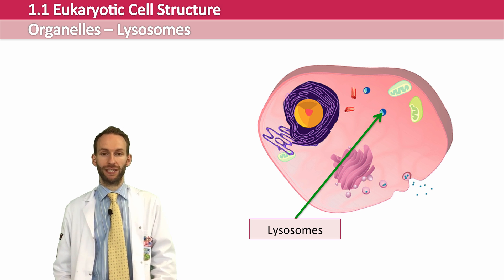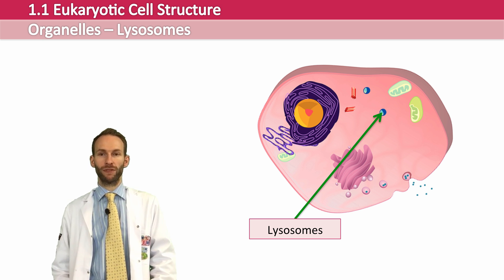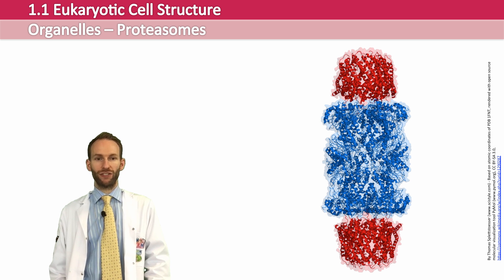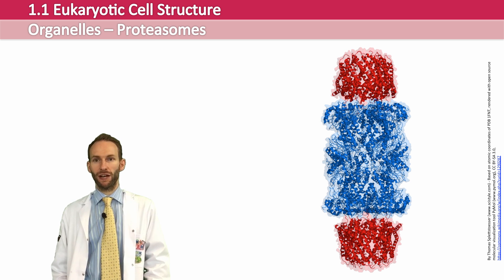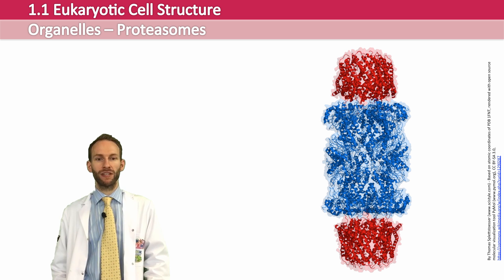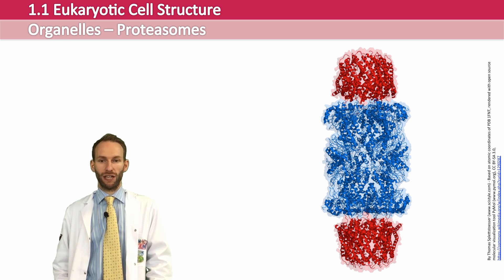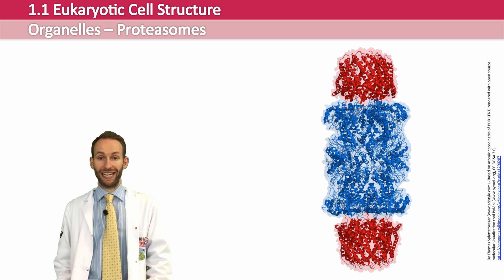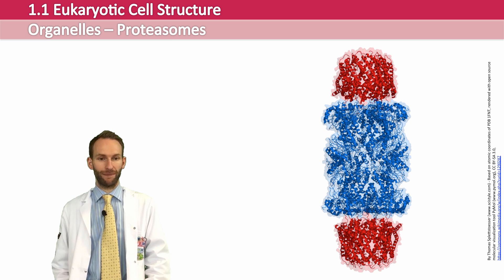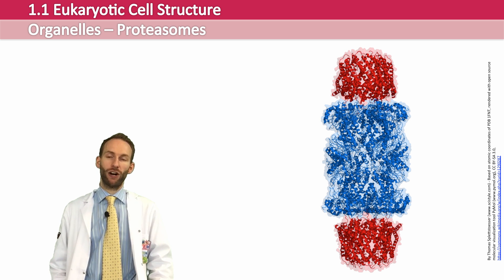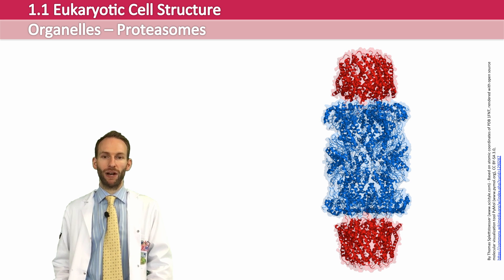Also found inside all eukaryotic cells are proteasomes, which are protein complexes found in the nucleus and cytoplasm. Their function is to degrade unneeded or damaged proteins via proteolysis — a chemical reaction that breaks down individual peptide bonds between amino acids. These endogenous proteins may have been misfolded or are in too-high concentrations. Proteins are tagged for degradation with a small protein called ubiquitin. The proteasome has been highly conserved during eukaryotic evolution.